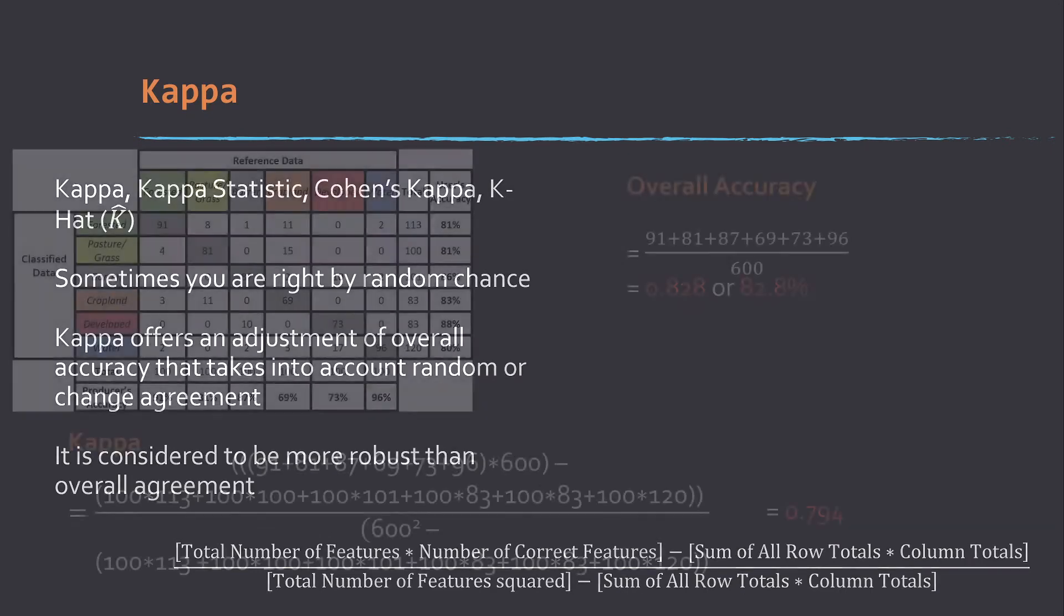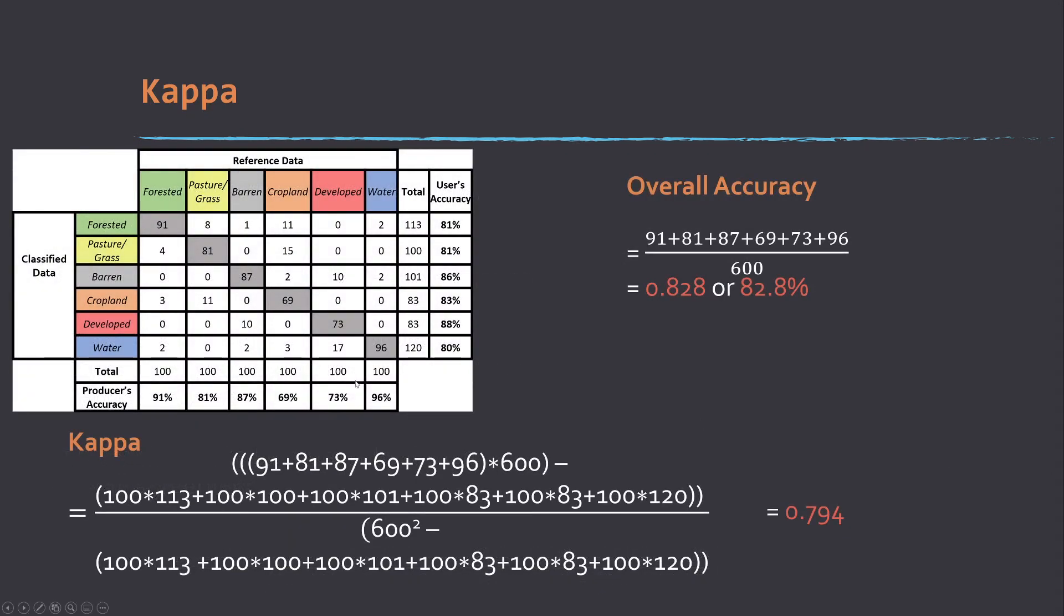How this is calculated is fairly straightforward. Let's look at calculating overall accuracy and kappa. Overall accuracy, you're just taking the sum of the diagonal and dividing by the sum of the total. So this table, these are the corrects, and then there's 600 samples.